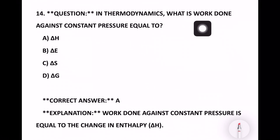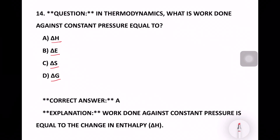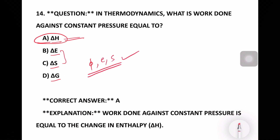In thermodynamics, what is the work done against constant pressure equal to? The options include entropy, enthalpy, Gibbs free energy. Option A is the right answer — the answer is enthalpy.